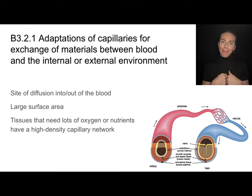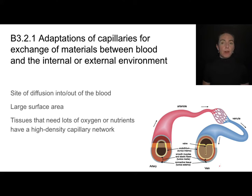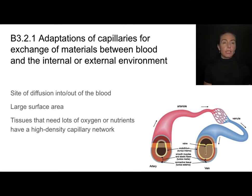In humans, we have our heart, and our heart is going to pump blood away from the heart and to other regions of the body through structures called arteries. Arteries carry blood away from the heart — A for artery, A for away — and veins return blood back to the heart. Neither arteries nor veins are where materials actually diffuse in or out of the blood or tissues. That happens in very tiny blood vessels called capillaries, which are the site of exchange between the blood and the environment.